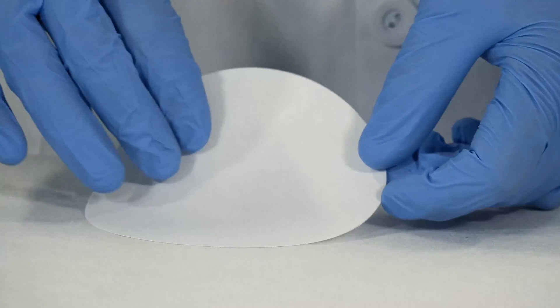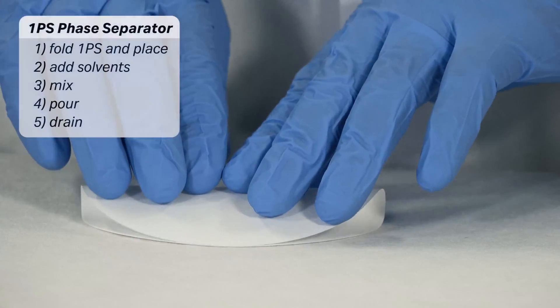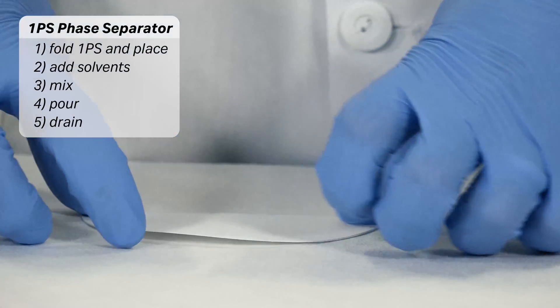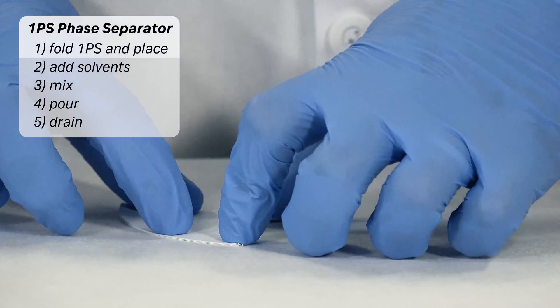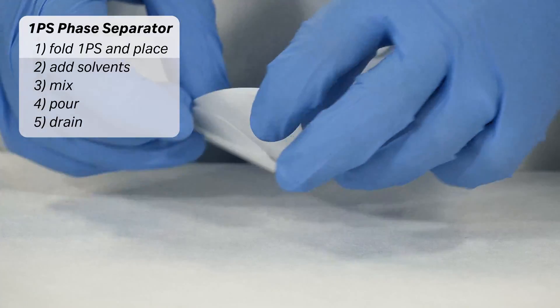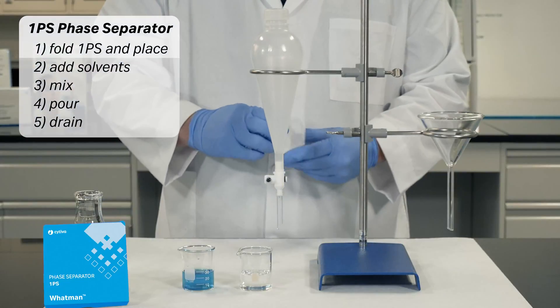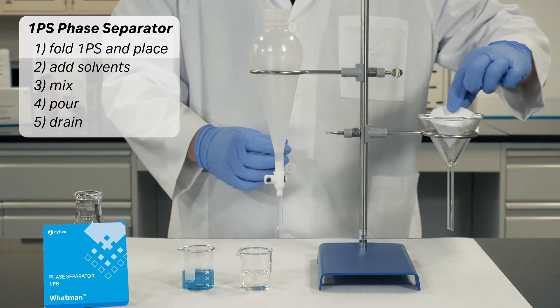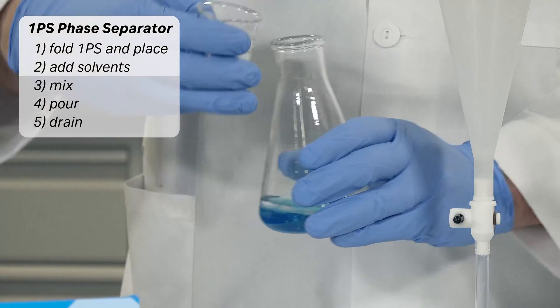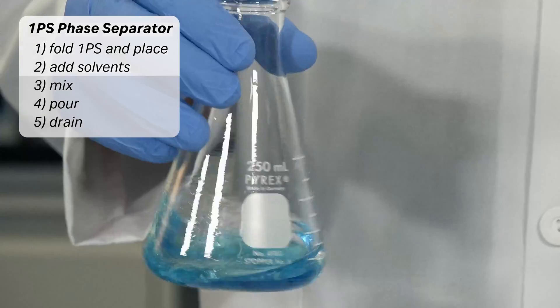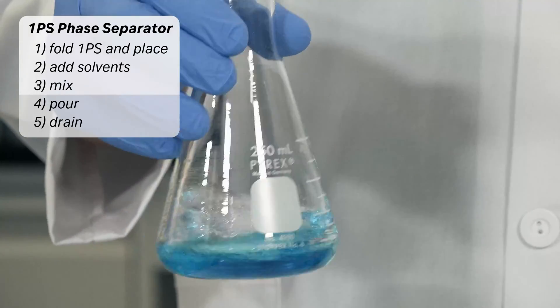Now, let's switch to the Whatman 1PS phase separator papers from Cytiva. Fold the 1PS phase separator paper into a cone and place into the glass filter funnel. Add equal amounts of an aqueous and organic solvent to an Erlenmeyer flask. Mix by swirling several times.